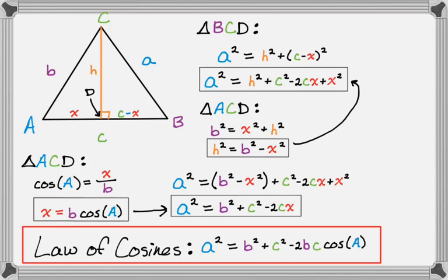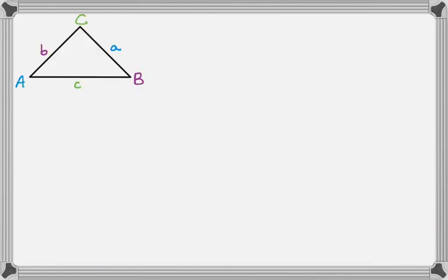But there's actually three ways to rewrite this, so let's take a look at those. We could start with c squared, and if it's c squared, then we're going to have equals the other two sides squared, so a squared plus b squared, minus 2 times those other two sides, so a, b, and then cosine of the angle.